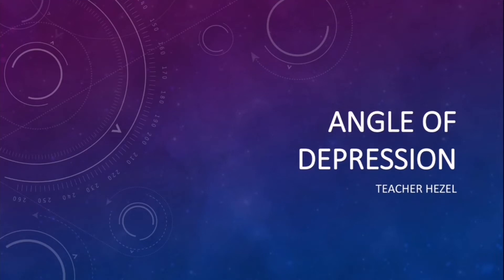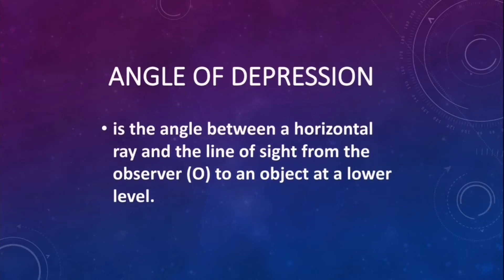First, let us discuss what is the angle of depression. So the angle of depression is the angle between a horizontal ray and the line of sight from the observer to an object at a lower level.